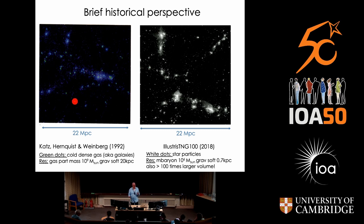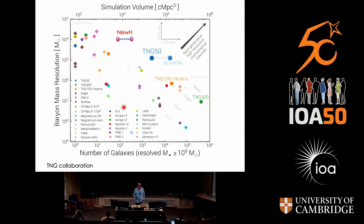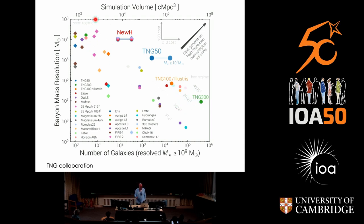This slide, borrowed from the TNG collaboration, shows the number of galaxies resolved with a mass of 10⁹ solar masses as a function of baryonic mass resolution. You have the large-box regime on one side and zoom simulations on the other — the classic trade-off: not a lot of resolution but a lot of statistics in the boxes, and high resolution with generally more physics but very few galaxies in the zoom regime. In between there's a 'no man's land' where TNG50 and NewHorizon sit — not quite the resolution of zooms, but with a large number of galaxies.